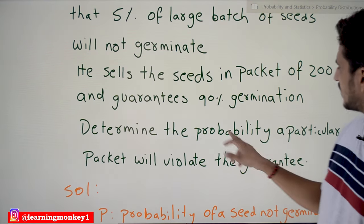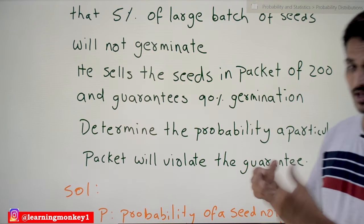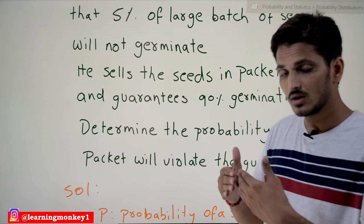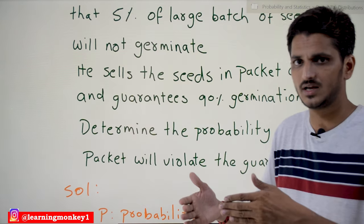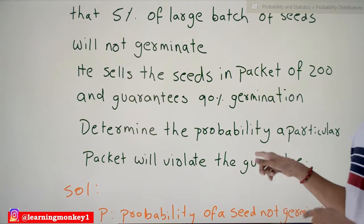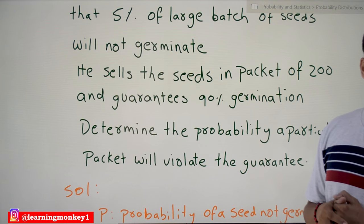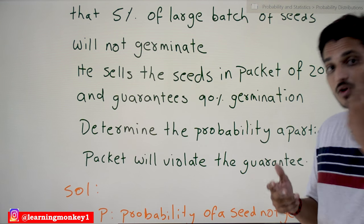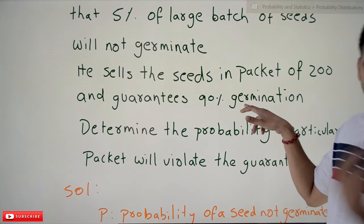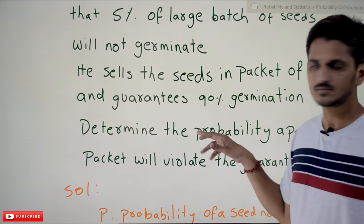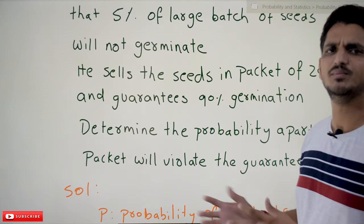Determine the probability a particular packet will violate the guarantee. If you take the packet, if more than 10% of the seeds not germinate, that packet is violating the germination condition of 90% germination. So what's the probability? How much probability is there to violate this germination condition? That is what we have to identify. This is also something we do in real-time, not only in seeds but in many manufacturing companies.